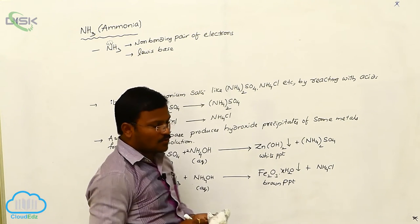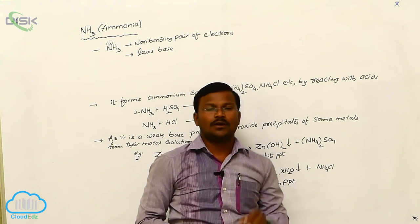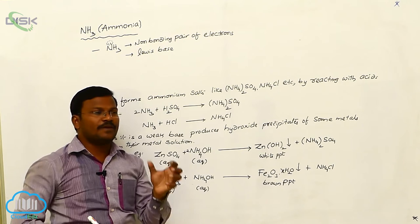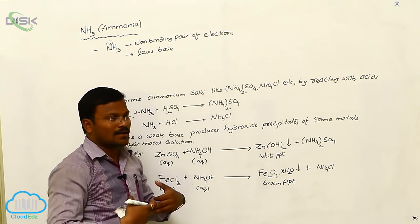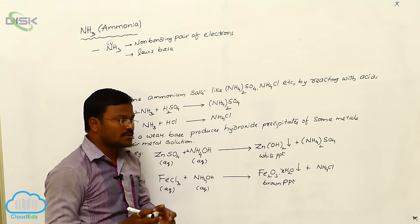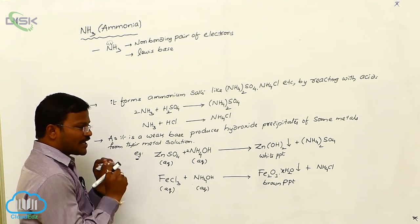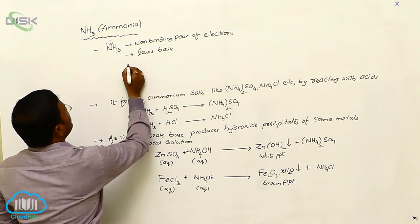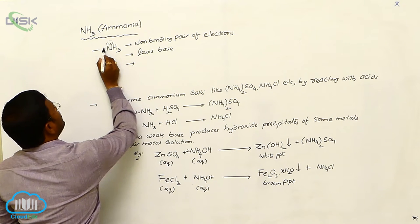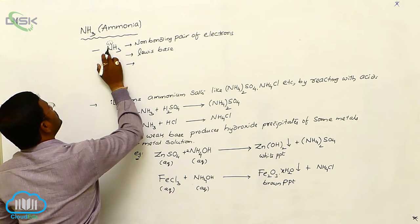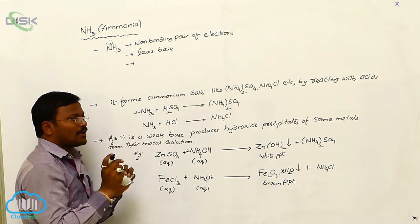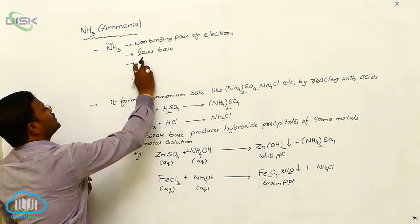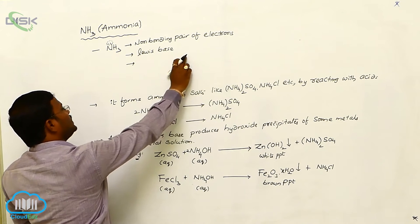From the first year course, we have learnt about Lewis acids and Lewis bases. Chemical substances which readily accept lone pair electrons are called Lewis acids, whereas chemical substances or species which can donate non-bonding pair of electrons are called Lewis bases. Due to the presence of a non-bonding pair of electrons at the nitrogen atom of ammonia, ammonia works as a Lewis base.